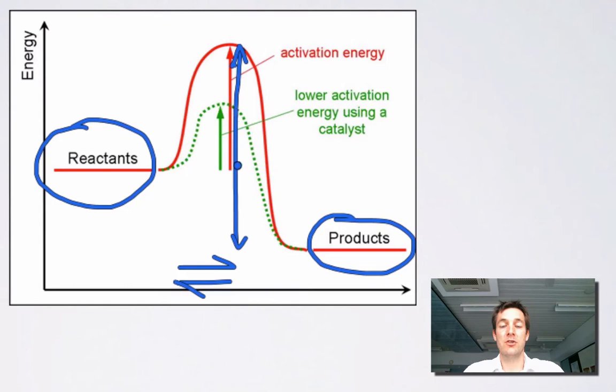Now this green line here shows what the reaction profile looks like when you do add a catalyst. So we know that catalysts provide an alternative route for the reaction and that that route will normally have a lower activation energy.